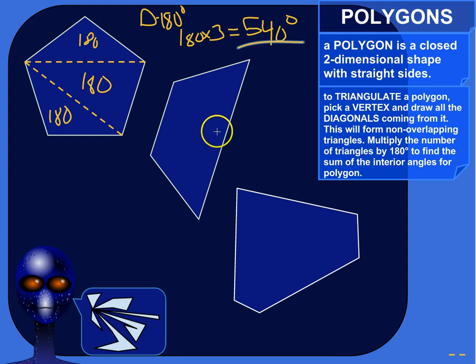All right, let's do another one. Let's do this trapezoid here. Grab my line. Okay, so just pick a vertex. I don't know, let's just pick this one. Okay, so I'm going to draw the diagonals, I'll draw all the diagonals that come from this vertex.